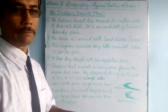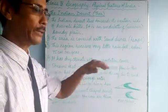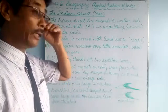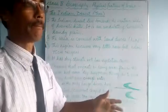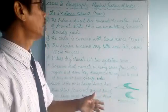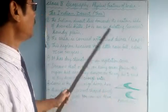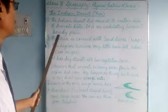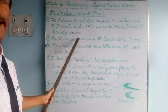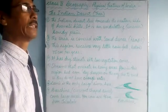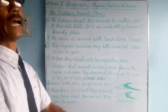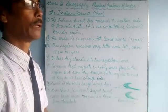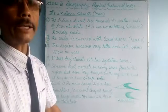It is an undulating sandy plain. Undulating means uneven — not flat. It is an undulating sandy plain where you will see sand everywhere. It is a very dry region.